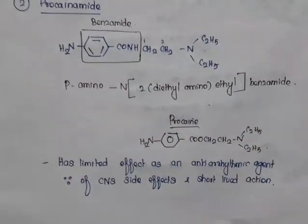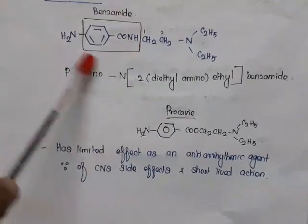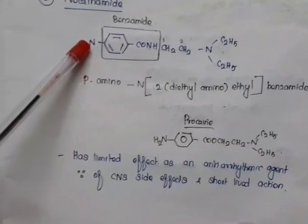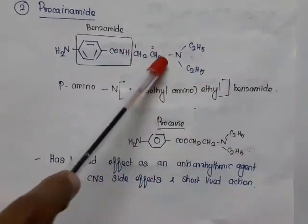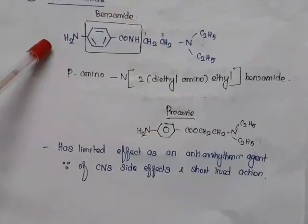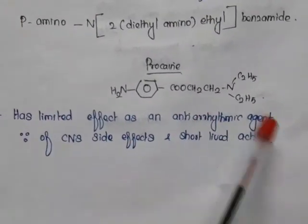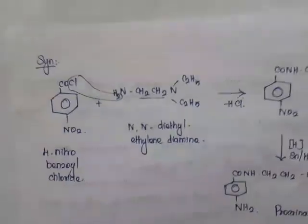The next drug is procainamide. Looking at its structure, the basic nucleus is benzamide — a benzene ring with a CONH₂ group. At the para position there is an amino group, and the nitrogen is connected to an ethyl group whose second carbon is connected to a diethylamino group. The chemical name is: 4-amino-N-(2-diethylaminoethyl)benzamide. Procainamide has structural similarity with procaine — the difference is that procainamide has an amide linkage whereas procaine has an ester. Procaine is a local anesthetic, and procainamide has limited use as an anti-arrhythmic agent due to CNS side effects and short-lived action.